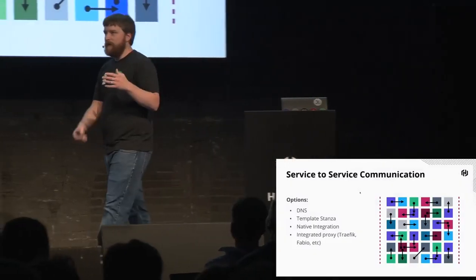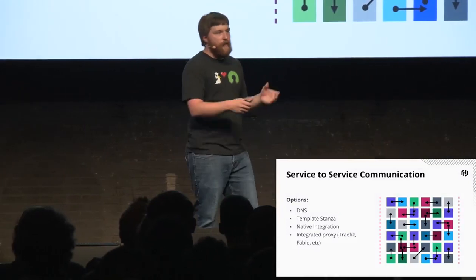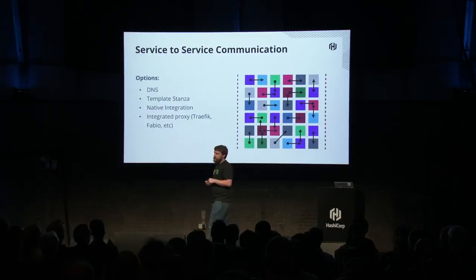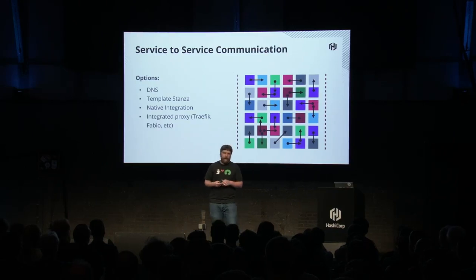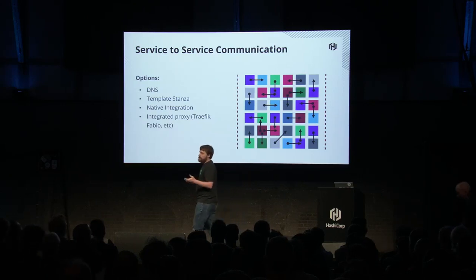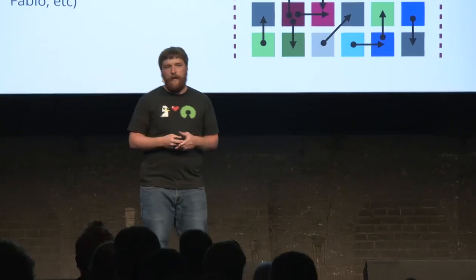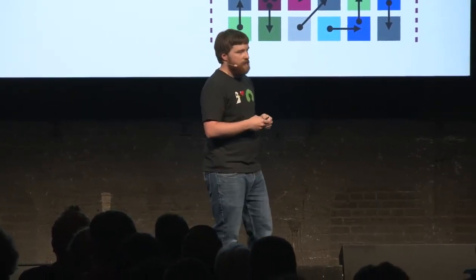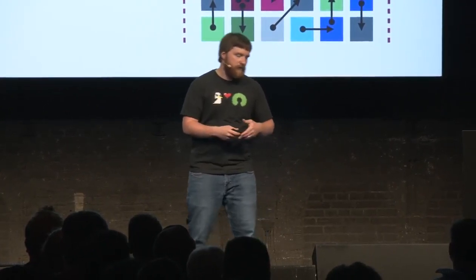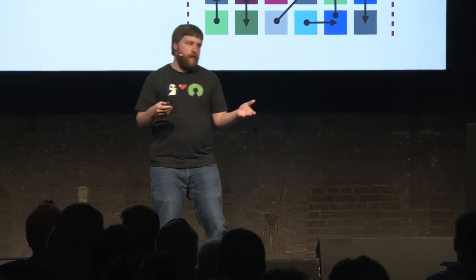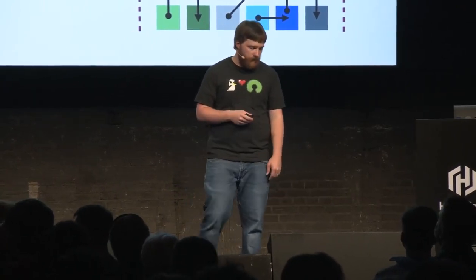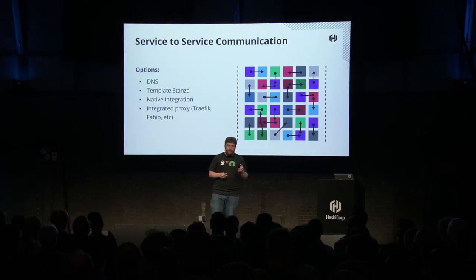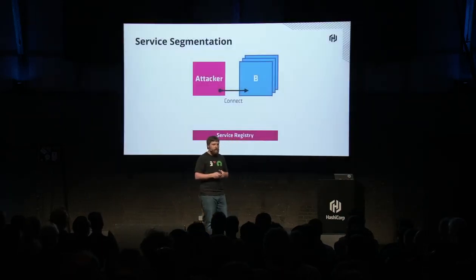Let's jump back to service-to-service communication. Nomad has always relied on Consul to solve the discovery of services in your cluster. But there have always been several options to do the plumbing and route things: setting up DNS using Consul's DNS interface, using a template stanza to template out services into a configuration file and reload your application, native integration where your application speaks to Consul directly, and proxies integrated with Consul like Traefik and Fabio. But all of these fail to solve the problem of service segmentation.